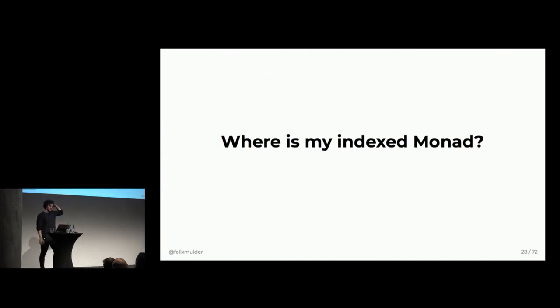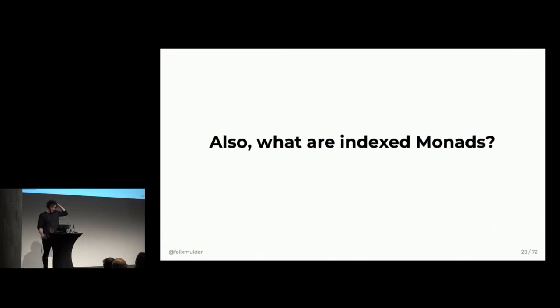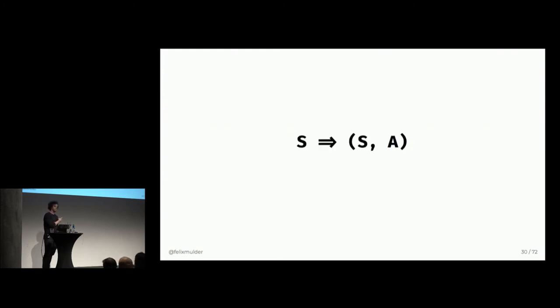So, where is my index monad? We still don't really have it. And also, what are index monads? We still don't really know what they are. So, let's try to answer that. Before, we had this function. And we're pretty comfortable with it. But it would be even better if we had this function. Because now we can have one state that can transition into a different kind of state. Still the same shape, roughly. But we have two different states, right?